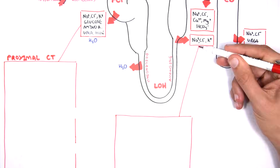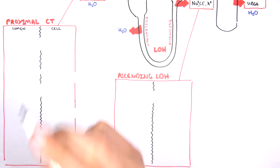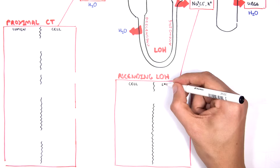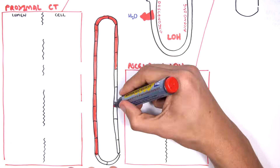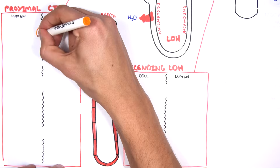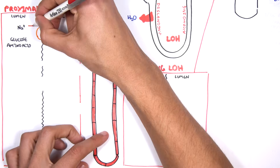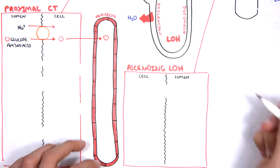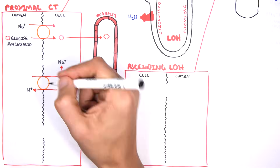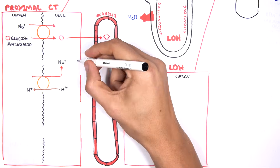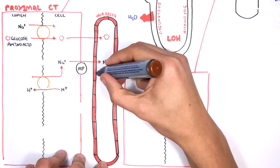Looking at the proximal convoluted tubule and ascending limb of the loop of Henle: the lumen refers to the inside of the nephron tube, the cells line up the tube, and the vasorecta is the circulation. In the proximal convoluted tubule, sodium gets reabsorbed together with glucose or amino acids. The glucose or amino acid then gets reabsorbed back into circulation. There is another transporter using a sodium-hydrogen exchange. Sodium is reabsorbed inside the cell and then exchanged with potassium via the sodium-potassium ATPase pump.